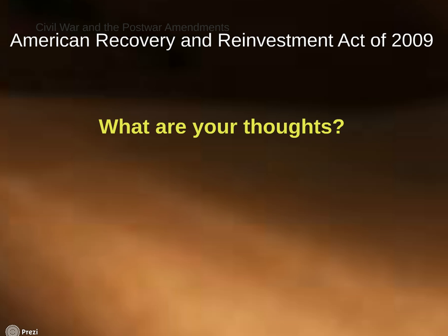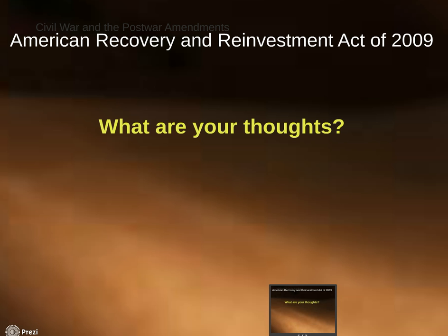Where states had more discretion over the use of grant money, they used it to keep people employed or to create new jobs. For example, state and local governments used the grants to keep teachers and police officers on the job, and they created jobs in the construction industry by hiring private construction firms to do government construction projects. The federal government stimulus money in the form of competitive categorical project grants was distributed more slowly because state and local governments had to prepare proposals making a case for the federal government to fund their projects. Categorical project grants provided funds for energy efficiency programs, broadband access, high speed rail transportation projects, and educational reforms.